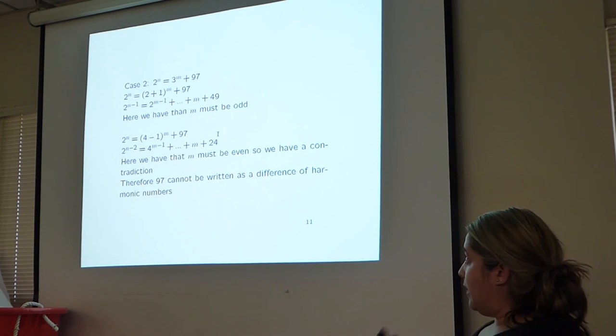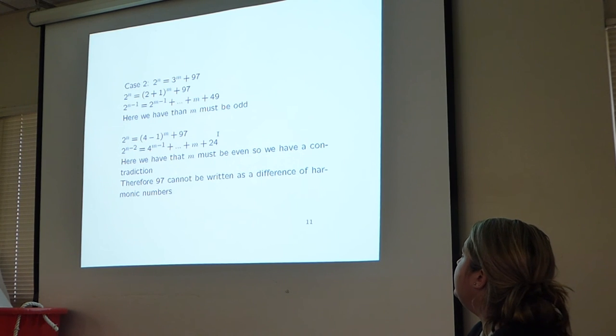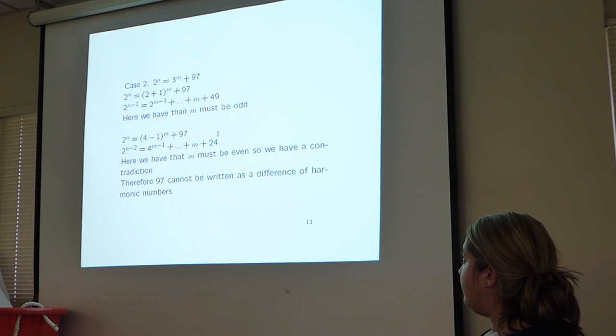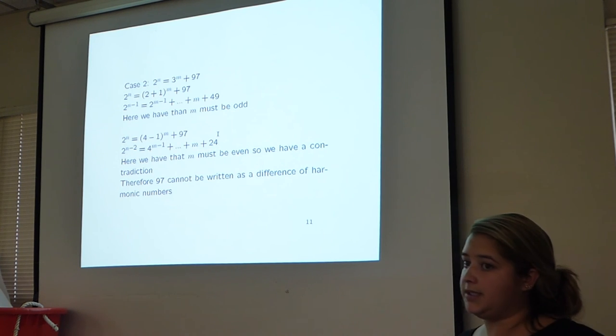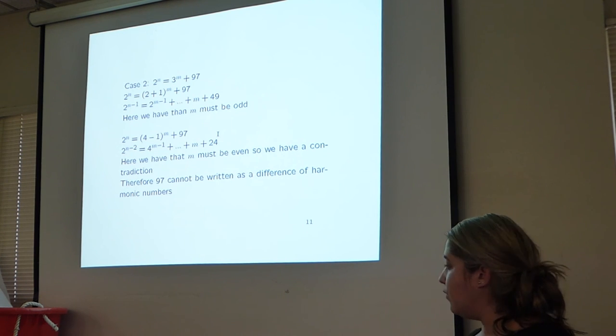We go to case 2, where the power of 2 is larger than the power of 3. Again, we break up the 3 into 2 plus 1, do binomial expansion. For the same reasons, we have a factor of 2 in each of these terms. But we have this odd term here, so m must be odd for both sides to be even. Working with m is odd, we write 3 as 4 minus 1. We do binomial expansion. But then here, we have an even term, and so m must be even, but we just said that m was odd, so we have a contradiction. Therefore, we prove that 97 cannot be written as a difference of harmonic numbers.